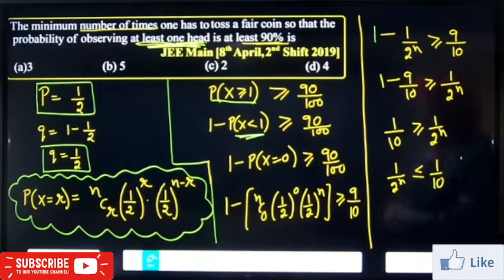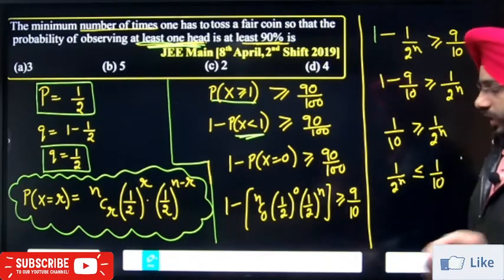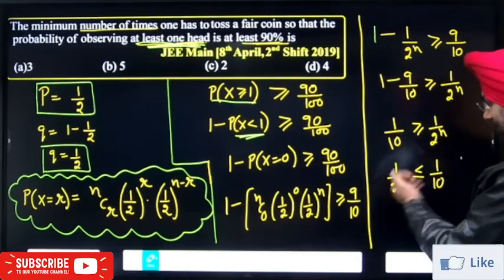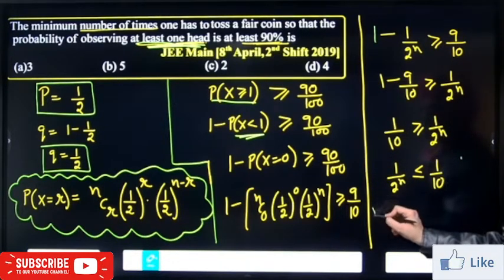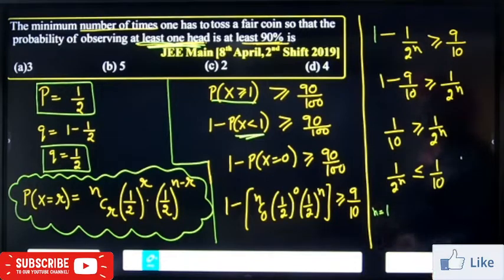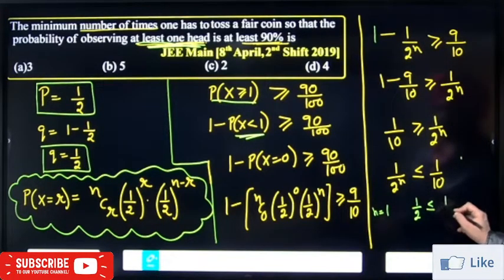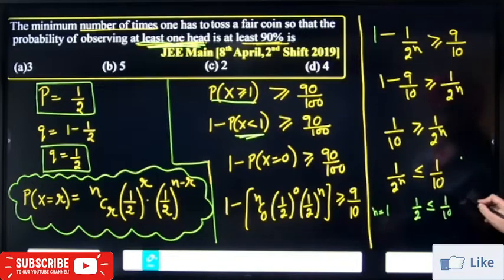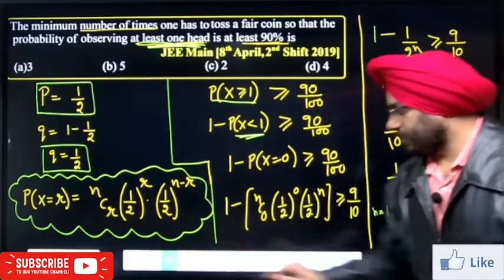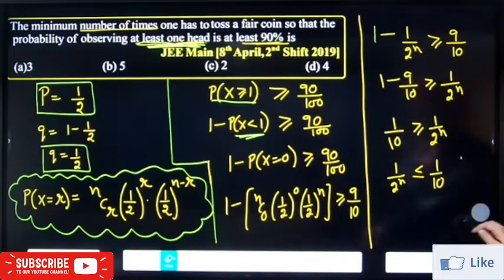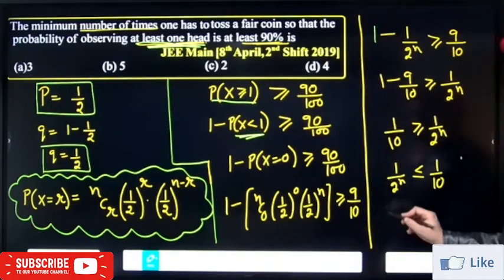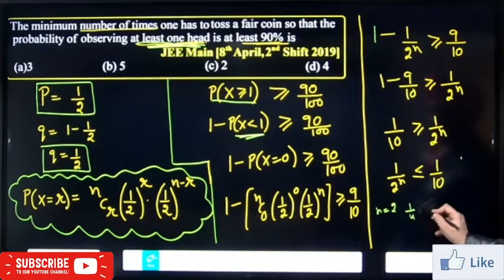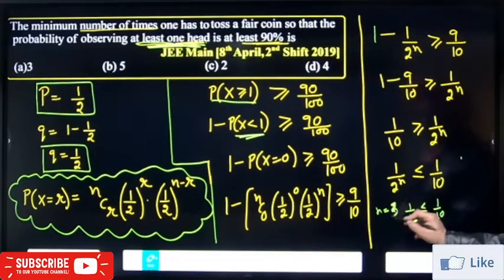Now we substitute values of n. If n = 1: (1/2)^1 = 0.5, which is not less than 0.1, so not possible. If n = 2: 1 by 4 = 0.25, still greater than 1 by 10, not possible. If n = 3: 1 by 8 = 0.125, still greater than 1 by 10, not possible.